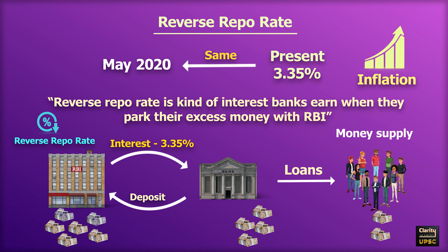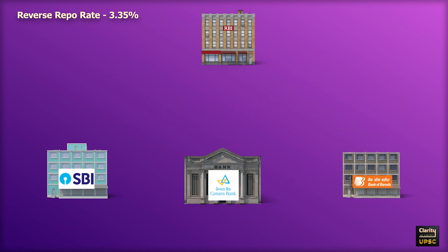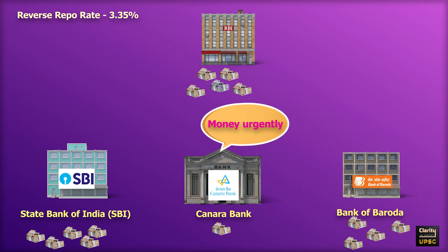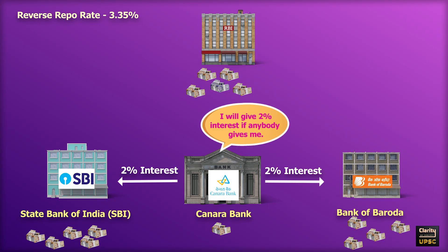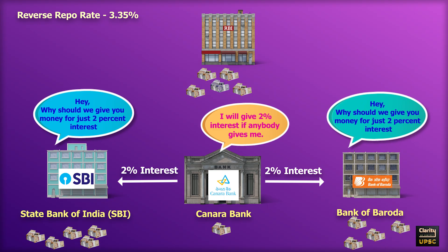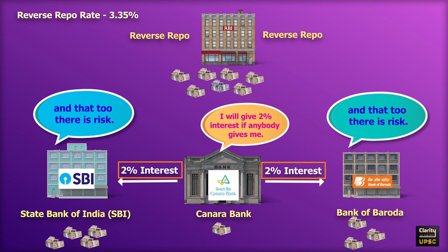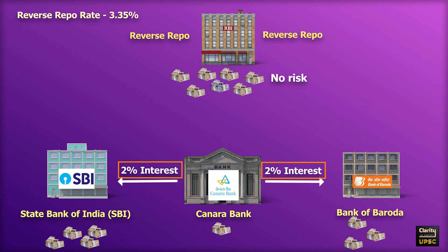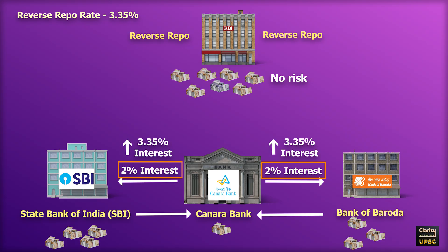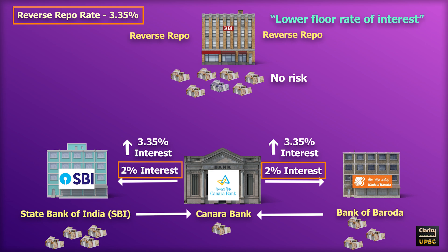Let me explain something more practical. Imagine there are 3 banks: State Bank of India (SBI), Canara Bank, and Bank of Baroda. Canara Bank wants money urgently and offers 2% interest. Bank of Baroda and SBI ask why they should lend at 2% when keeping money with RBI under reverse repo earns 3.35% with no risk. So when banks lend to each other as short-term loans, they will only do so at more than 3.35% — more than the reverse repo rate. This acts as a kind of lower floor rate of interest in the market.